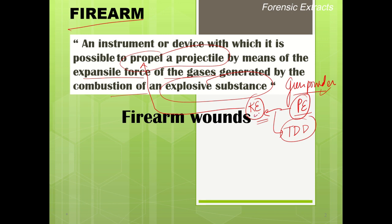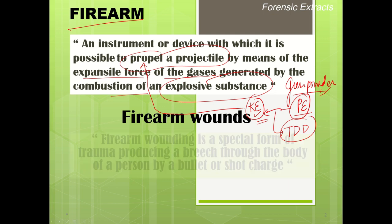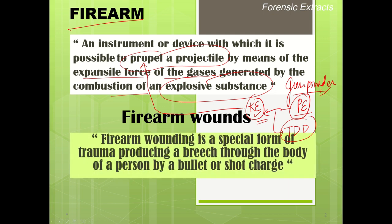A firearm converts the potential energy of gunpowder into kinetic energy as a result of combustion of gases. Firearm wounds are a special form of trauma resulting from a bullet or shot discharged through the body, causing a breach through the body of a person. Firearm wounds are also related to firearm injuries.